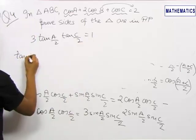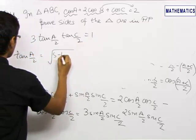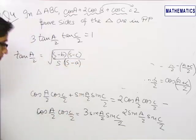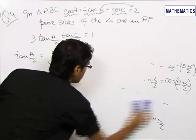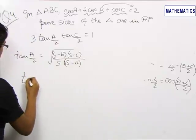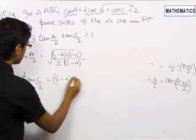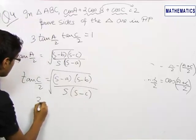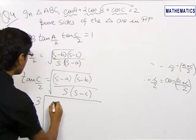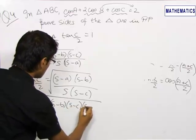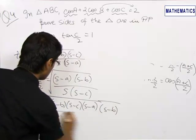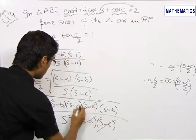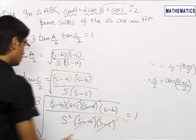Using the formula tan(C/2) = √[(s-a)(s-b)/(s(s-c))] and similarly tan(A/2) = √[(s-b)(s-c)/(s(s-a))], we substitute these values. After cancellation, we get 3(s-b) = s.